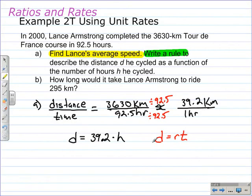In part b of example 2T, we're going to use this function we wrote in part a, Lance's distance equals 39.2 kilometers per hour times the number of hours he travels, to figure out how long it will take Lance to ride 295 kilometers. So for d, we'll substitute 295, and on the right hand side we have 39.2 times h, and we want to solve for the number of hours.